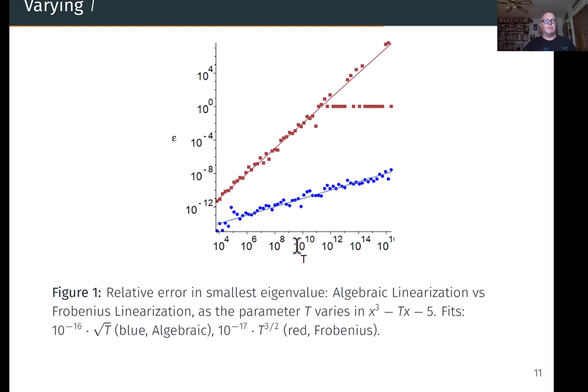Let's try different values of t for that same example. We compute the relative error of the smallest eigenvalue, algebraic linearization in blue versus Frobenius linearization in red. As the parameter varies from about 10 to the 4th to 10 to the 16th, we see that the relative error grows for the algebraic linearization. The blue one grows like square root of t, 10 to the minus 16 times square root of t. The error in the Frobenius form grows like 10 to the minus 17 times t to the 3 halves, so it's a factor of t worse. By about t equals 10 to the 12th, we get 100% error, absolutely hopeless. This is a pretty clear and convincing victory for this small example.